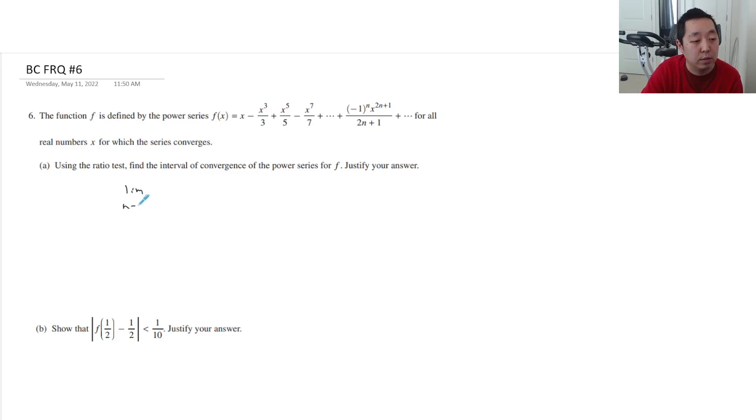Okay, so ratio test is you're doing the limit as n goes to infinity. And you're doing the next step. When you put absolute values, you can strip out the sign-changing part. It's x to the 2n plus 1 plus 1 over 2n plus 1. I'm sorry, 2n plus 1 plus 1 over 2n plus 1, all of that over x to the 2n plus 1 over 2n plus 1.